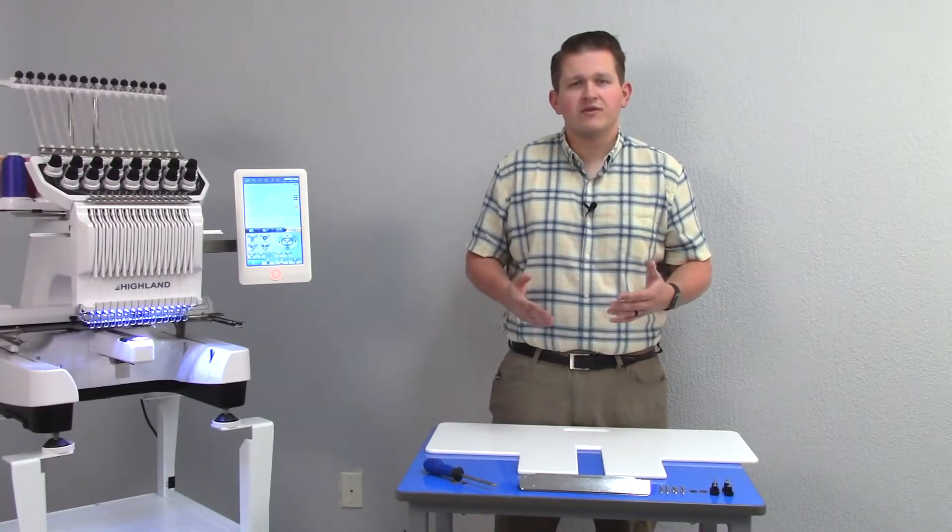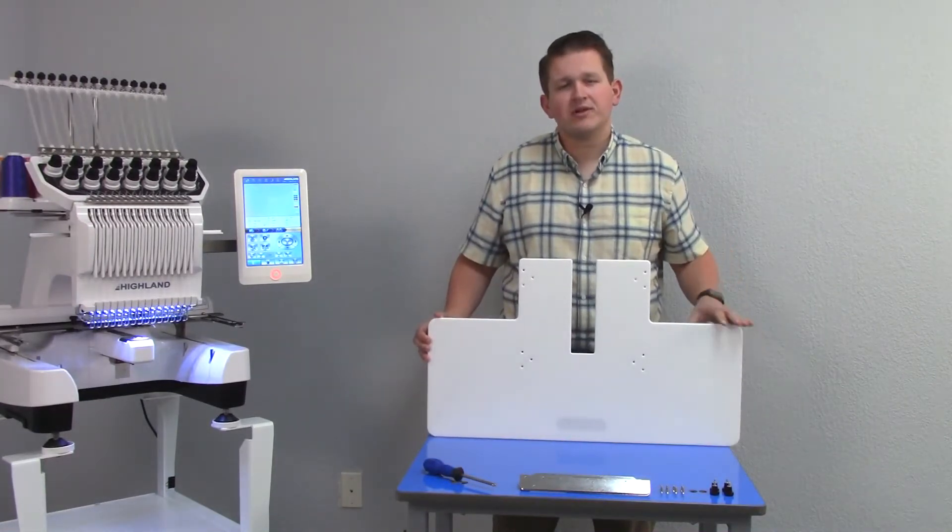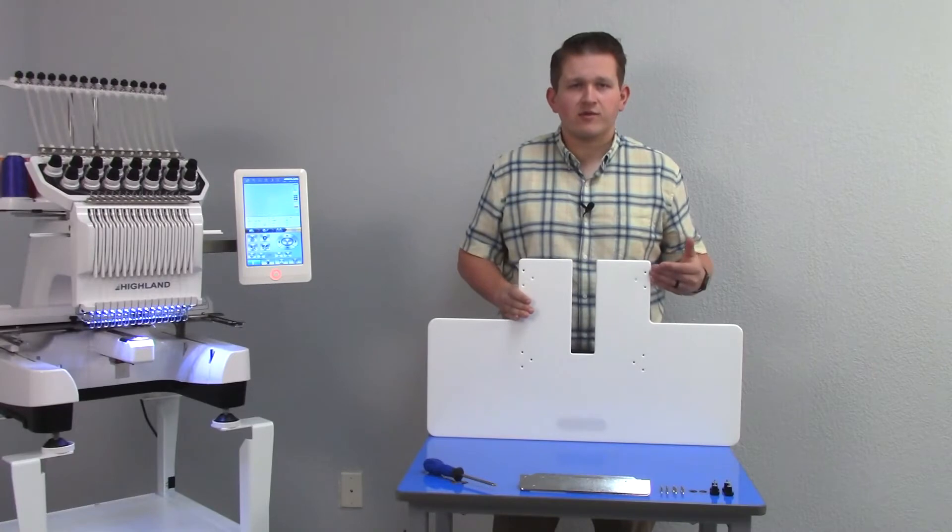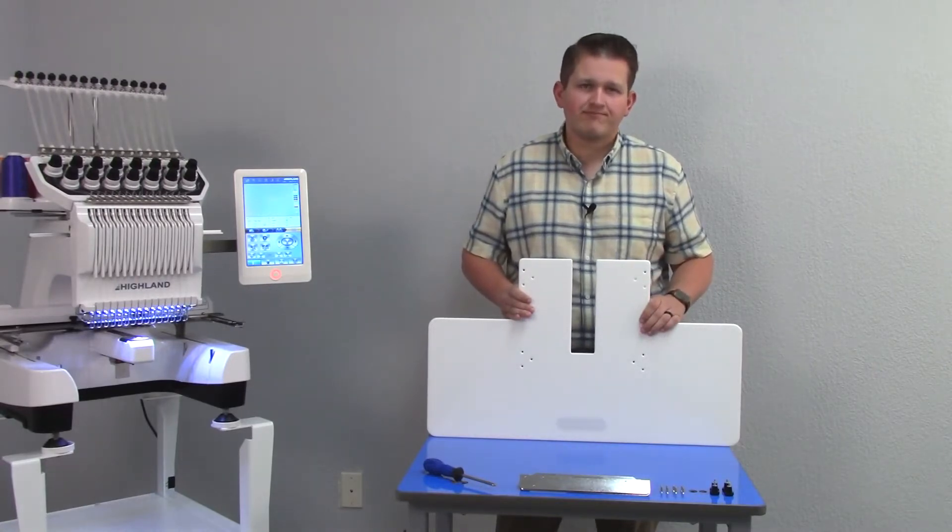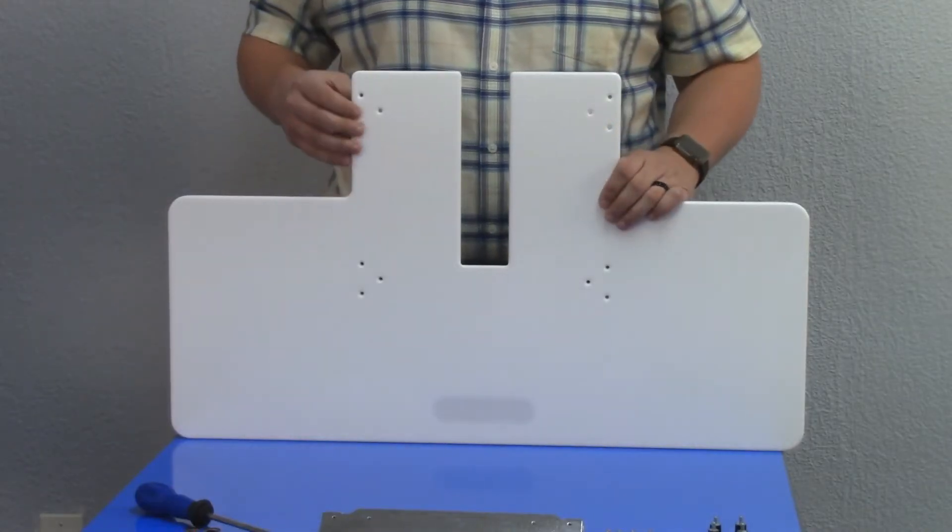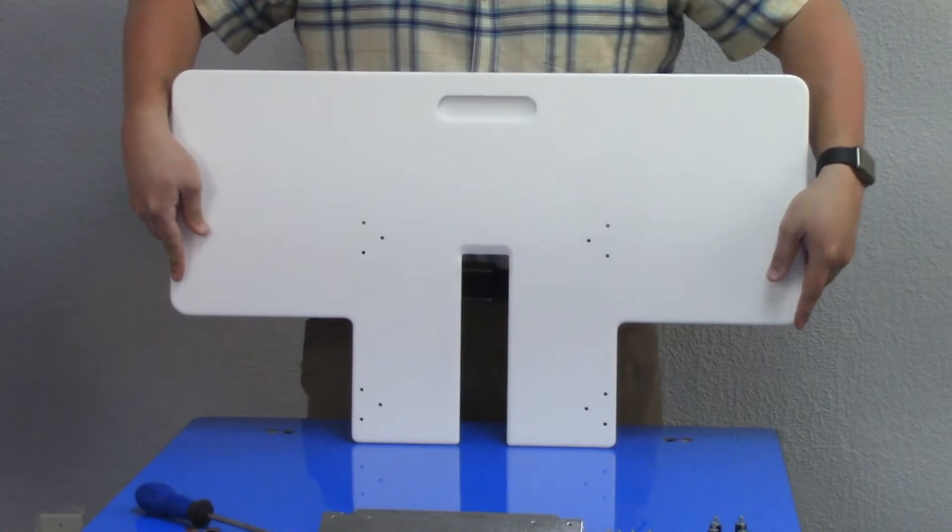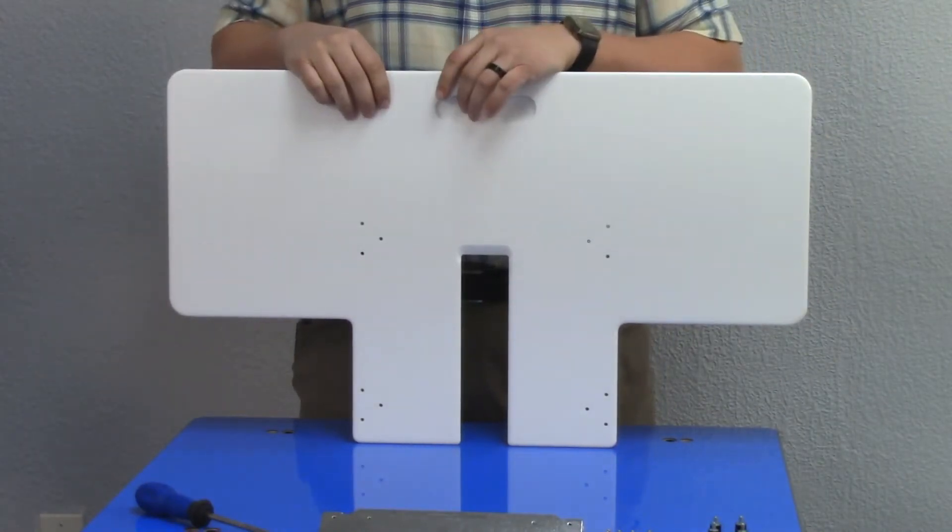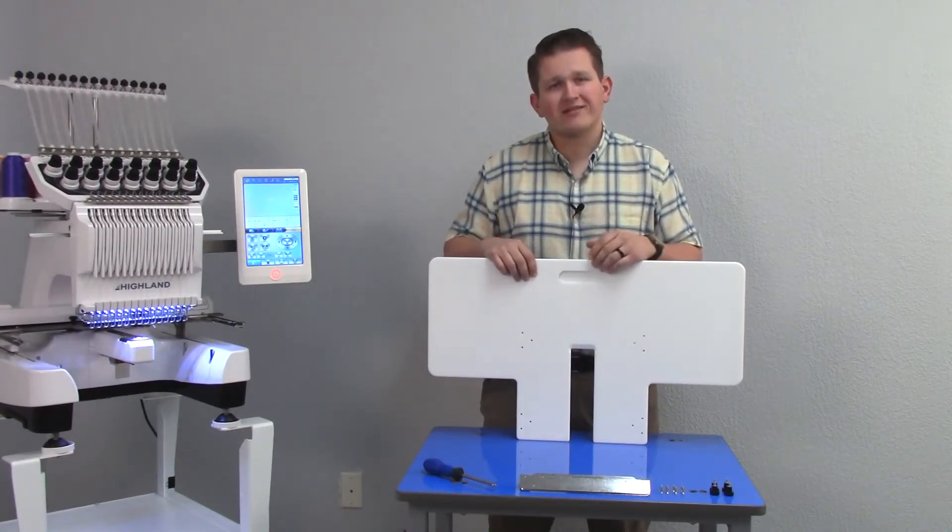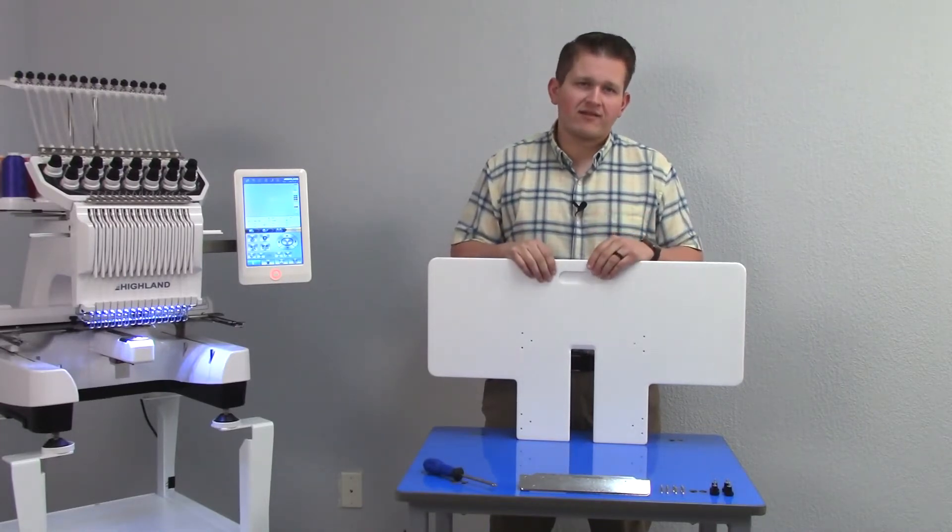You're going to need your white table top which came with the machine as well. Typically when this comes, it will have a protective covering which needs to be removed prior to installing the table brackets. When looking at your table top, there's a top and a bottom side to it. The top side has these countersunk screw holes, whereas the bottom side has this handle cut out towards the top. The bottom side is where our brackets are mounted, and the screws go in from the top through the brackets behind it.